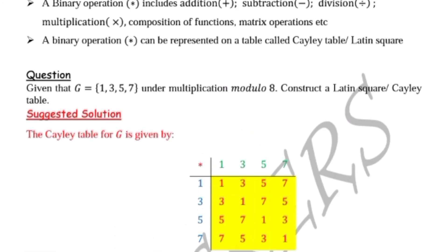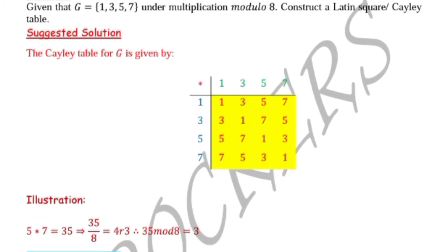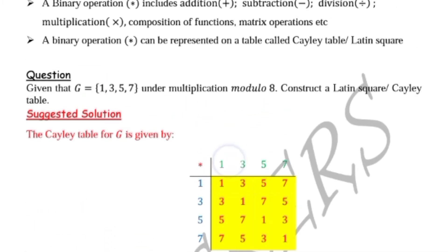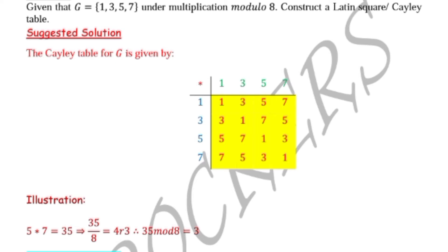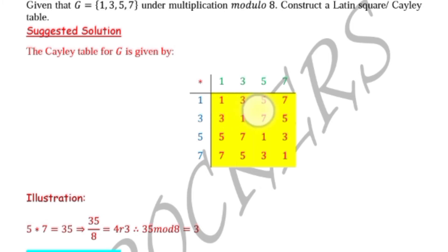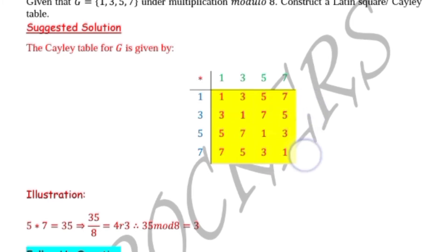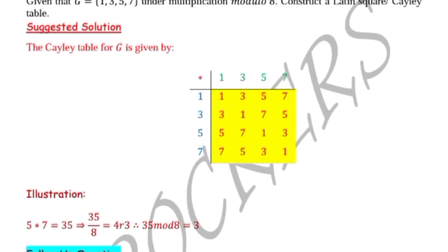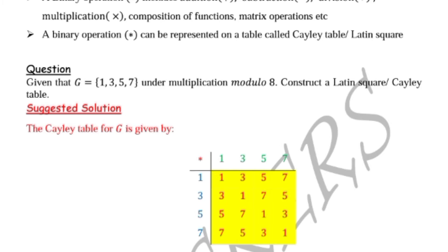We put our binary operation star here. For multiplication modulo 8, as explained in the previous video on modulo arithmetic, we divide our answers by 8 and the answers we write in the yellow area of the table are the remainders we get after multiplying the two elements and dividing by 8.